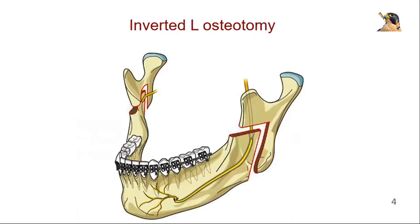The inverted L-osteotomies are full thickness osteotomies of the ramus. If performed bilaterally, they divide the mandible into two smaller segments that contain the condyle, posterior border, and coronoid process, and a large segment consisting of the mandibular body including the teeth and chin. Osteotomies are performed posterior and superior to the inferior alveolar canal.